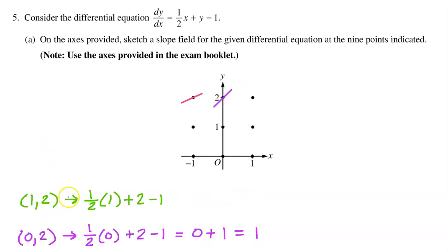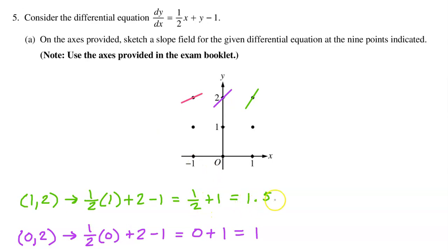At the point (1, 2), we have one-half times 1 plus 2 minus 1. This gives a decreasing slope; try to make it a little bit steeper than a 45-degree angle.